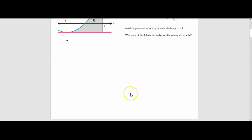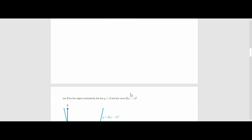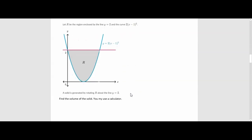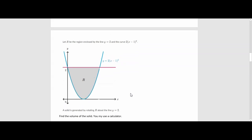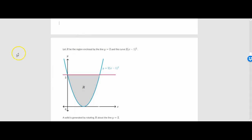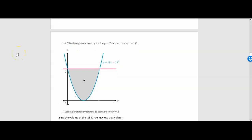Let's look at another example. It says: let R be the region enclosed by the line y equals 2 and the curve y equals 2 times the quantity x minus 1 squared. A solid is generated by rotating R around the line y equals 2. We need to find the volume of the solid — you may use a calculator. Because we're rotating around a horizontal line y equals 2, our disks are going to be perpendicular to the x-axis, so everything needs to be in terms of x.